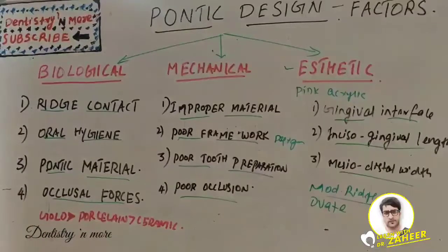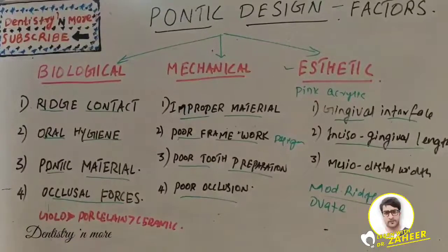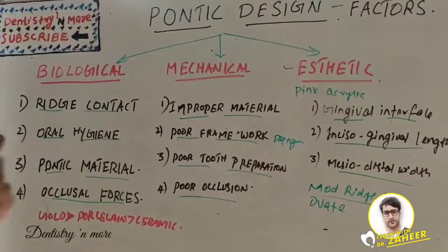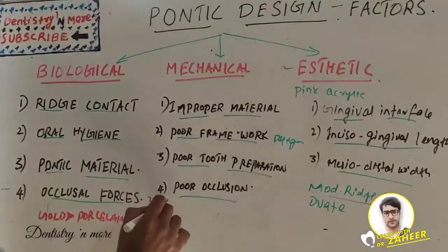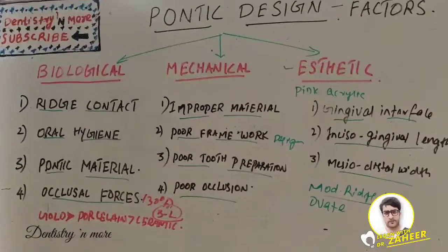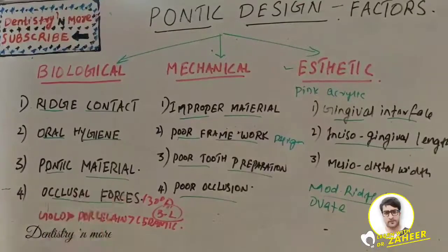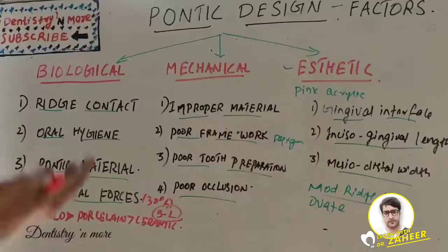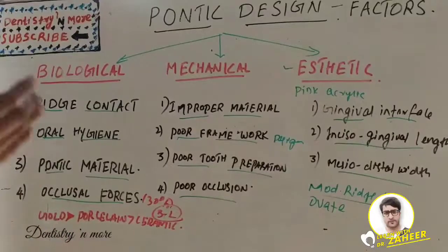Regarding occlusal forces, it has been suggested to reduce the buccolingual dimension of the pontic by 30%. However, in cases of parafunctional habits or accidental biting on a hard object, this 30% reduction may not be efficient. For patients with parafunctional habits, this would not be sufficient and could disrupt the harmonious and stable occlusal relationship.